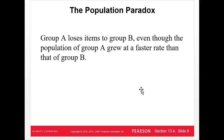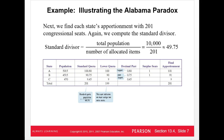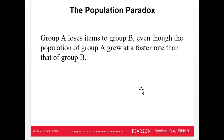The population paradox is when one group loses items to another group even though the first group grew faster than the second group. When a state's population grows high enough, we give it a new seat in Congress, and that's often when these paradoxes appear. The population paradox is sometimes called the growth rate paradox — you lose a seat even though you grew faster in the same time period.